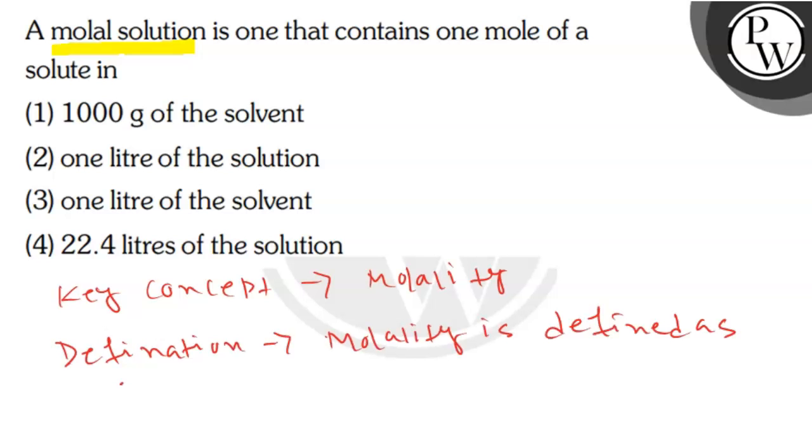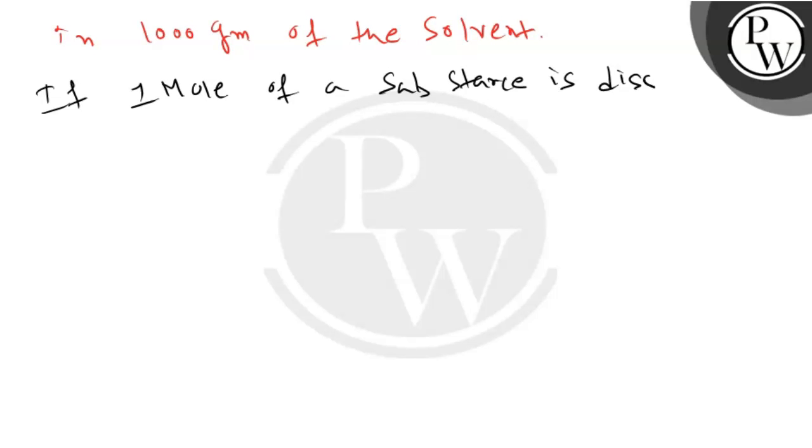the number of moles of the solute dissolved in 1000 grams of the solvent. If one mole of a substance is dissolved in 1000 grams of the solvent,